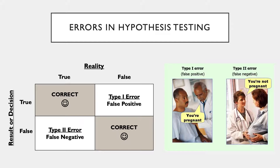Next, let's discuss some errors in hypothesis testing. As shown in the chart, there are multiple ways of interpreting information — two of which are true and two of which are inaccurate. We'll start with the relationship between reality and the result or decision. If in reality someone is pregnant and the pregnancy test tells them they are pregnant, that's accurate. If they are not pregnant and the test says they are not, that is also accurate.